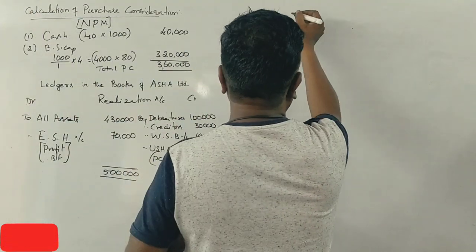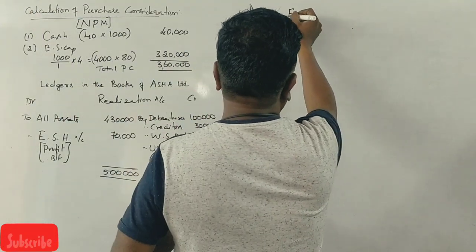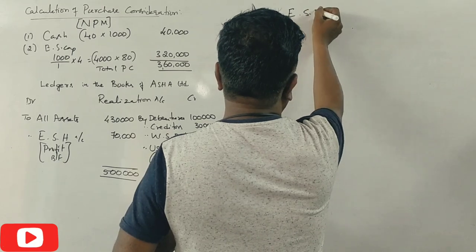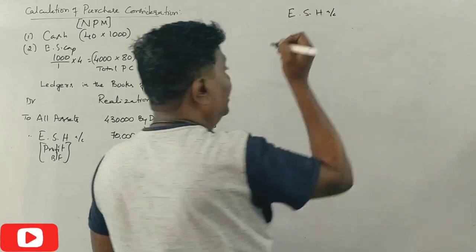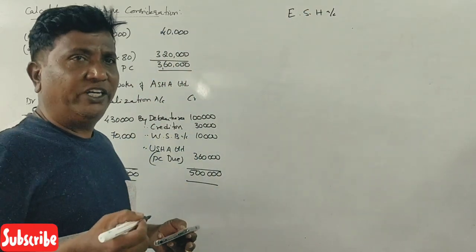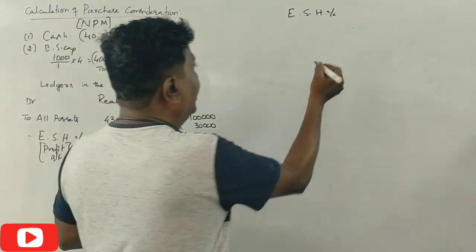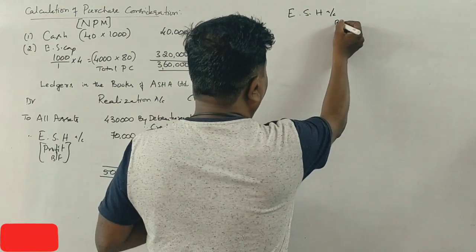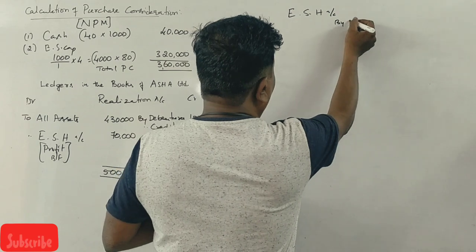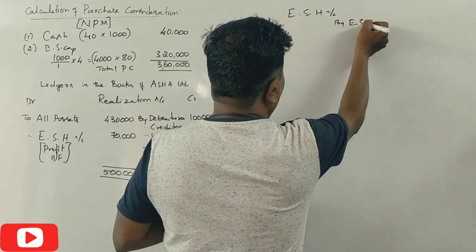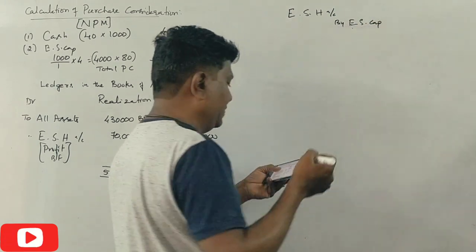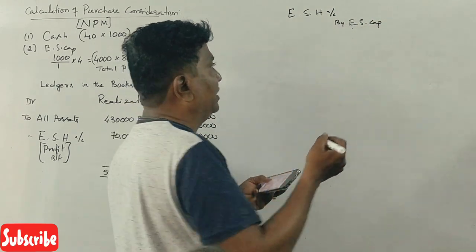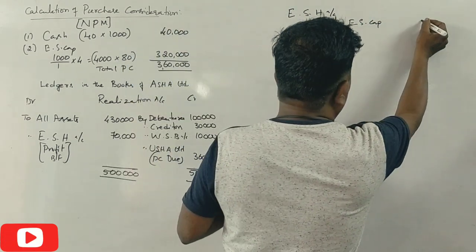Now let us prepare the Equity Shareholders Account in Asha company. On the credit side, the equity share capital as per the balance sheet of Asha company is Rs.2,00,000.